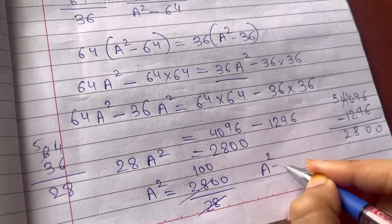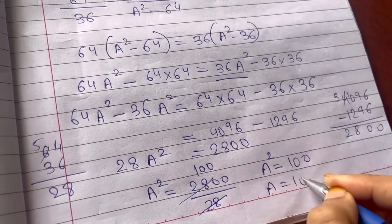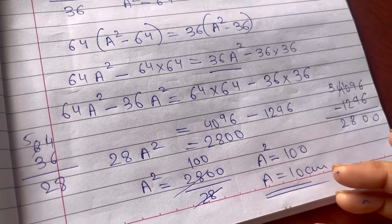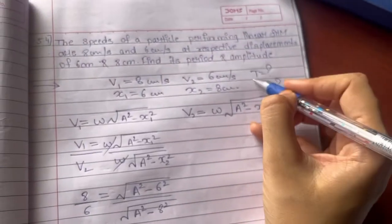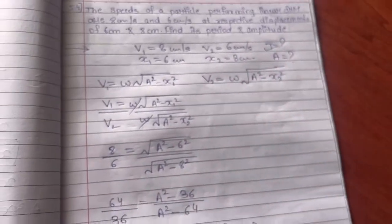So A square is 100. So A will be of course 10 cm. The amplitude is calculated, that is 10 cm. So this is done. Now they have asked us to calculate time period.